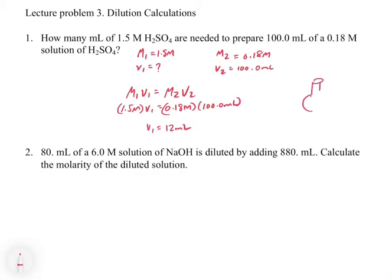What this is saying is, if we take a 100 mL volumetric flask, I'm putting in 12 mls of 1.5 molar, and then I fill this flask to the mark, what I'm going to get in this flask is 0.18 molar.